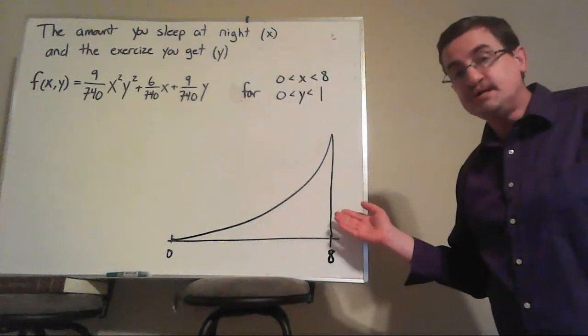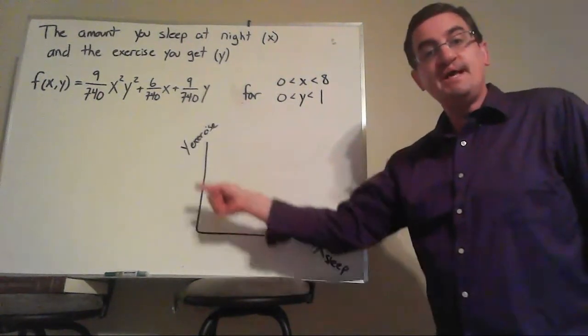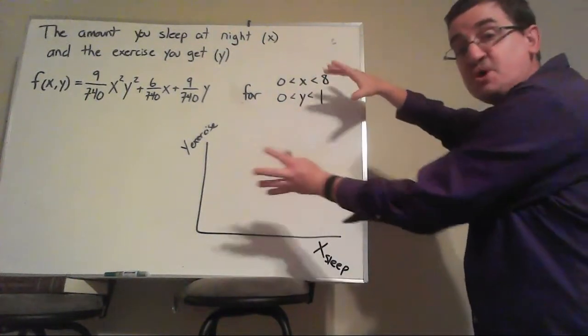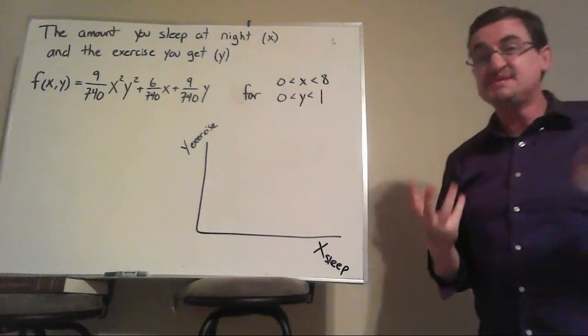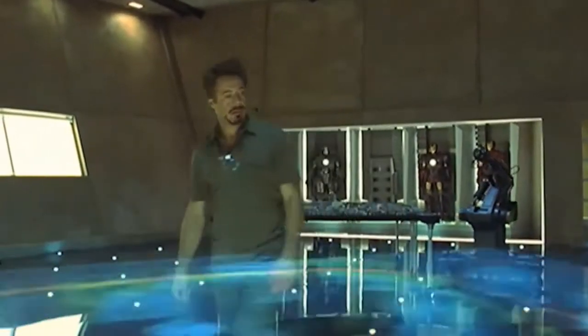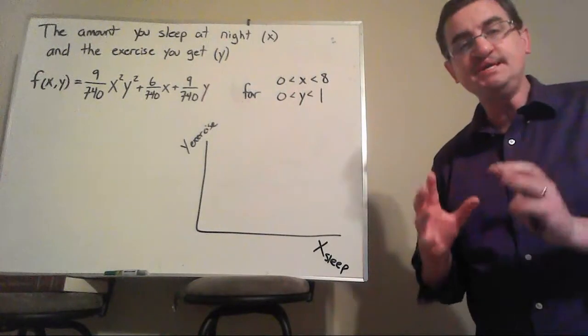Can we draw a picture? Yeah, but it's not going to be a nice two-dimensional picture. Because we need an axis for sleep and an axis for exercise. And the probabilities are going to be three-dimensional floating over this, which I really don't have the skill to draw. But we can still check that this is a valid PDF.